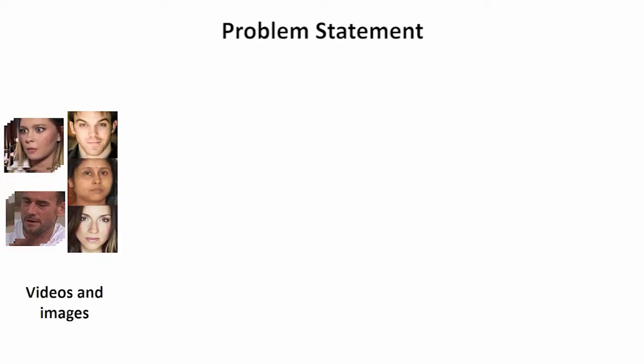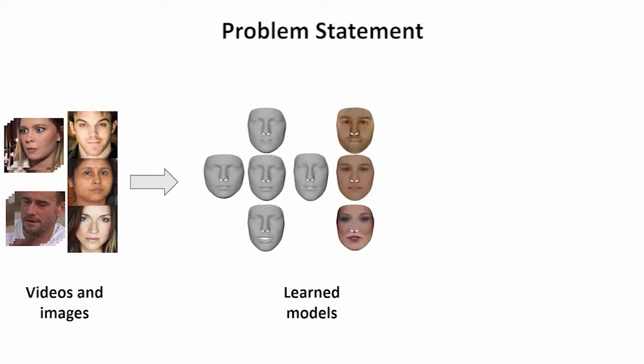Given videos and images of faces, we learn a complete 3D morphable face model, which consists of identity geometry, expression, and albedo components. While most approaches learn face models from limited 3D scans, we learn them from in-the-wild images and videos in a self-supervised manner.